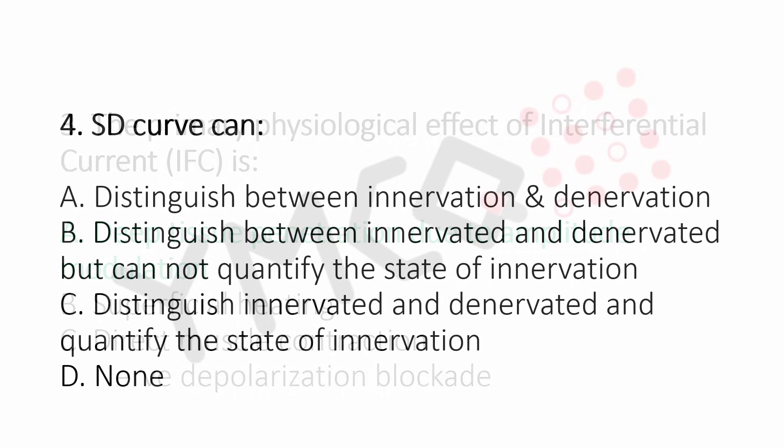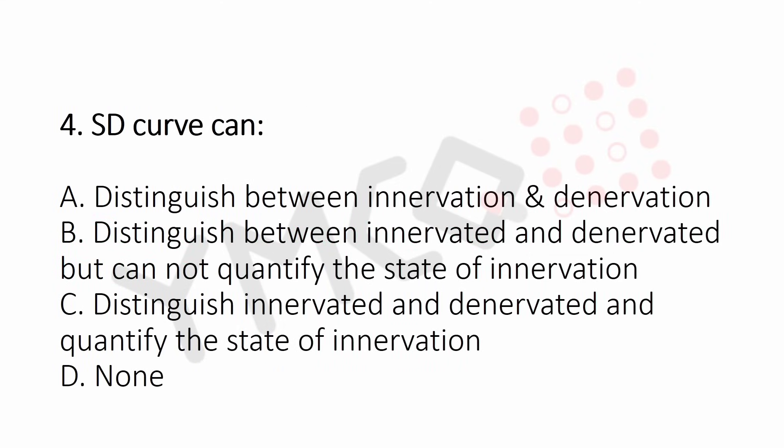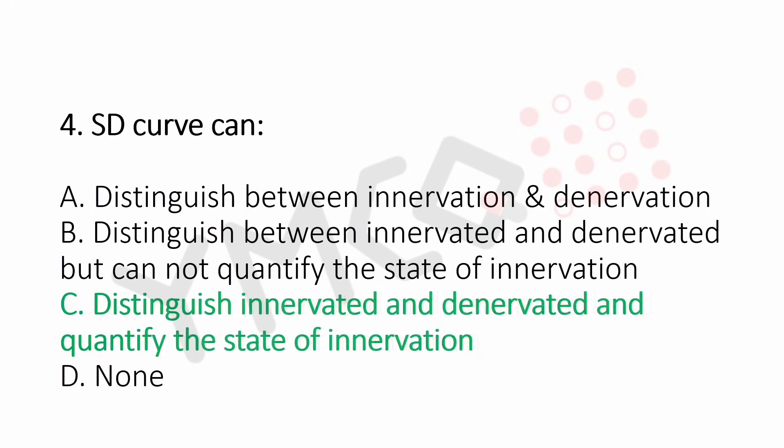Question 4: The SD (strength-duration) curve can — Option A: distinguish between innervation and de-innervation, Option B: distinguish innervated and de-innervated but cannot quantify the state of innervation, Option C: distinguish innervated and de-innervated and quantify the state of innervation, Option D: none. The answer is Option C: distinguish innervated and de-innervated and quantify the state of innervation.